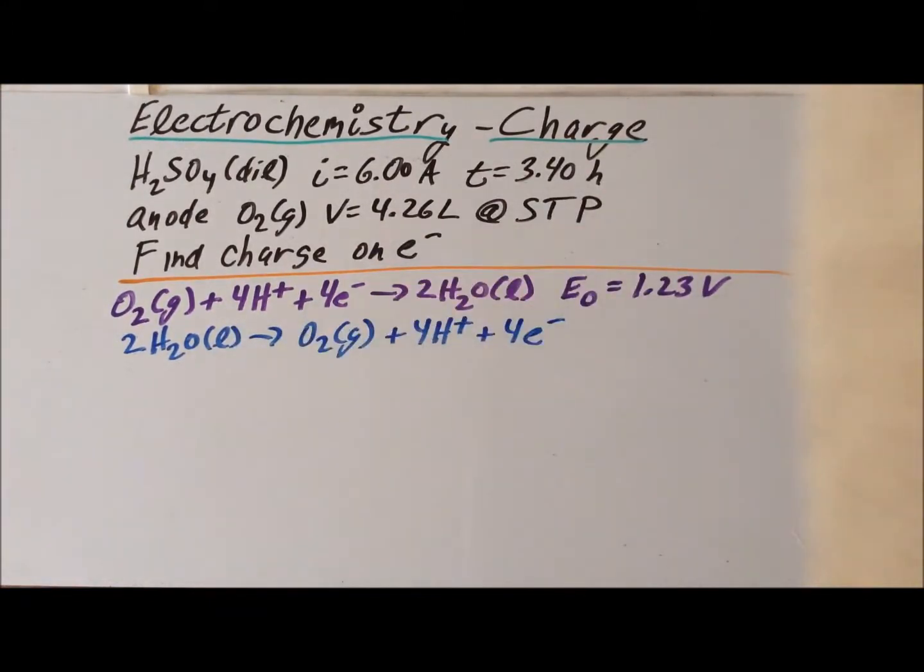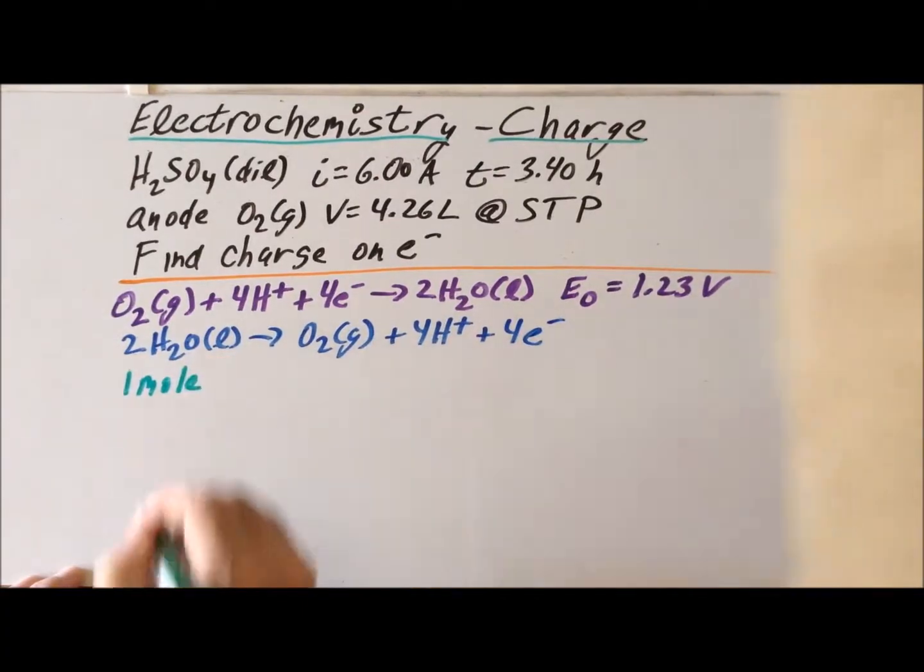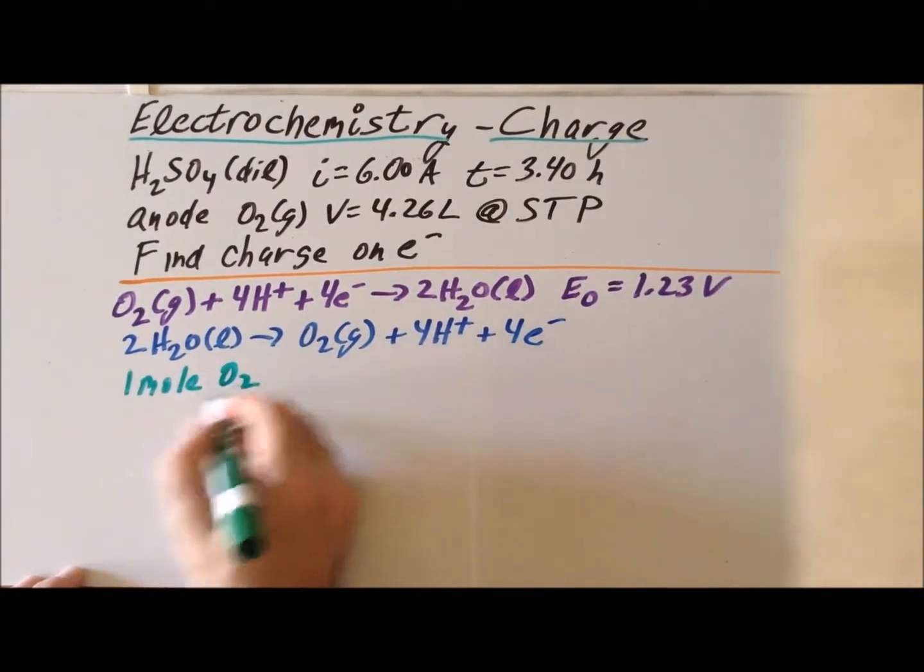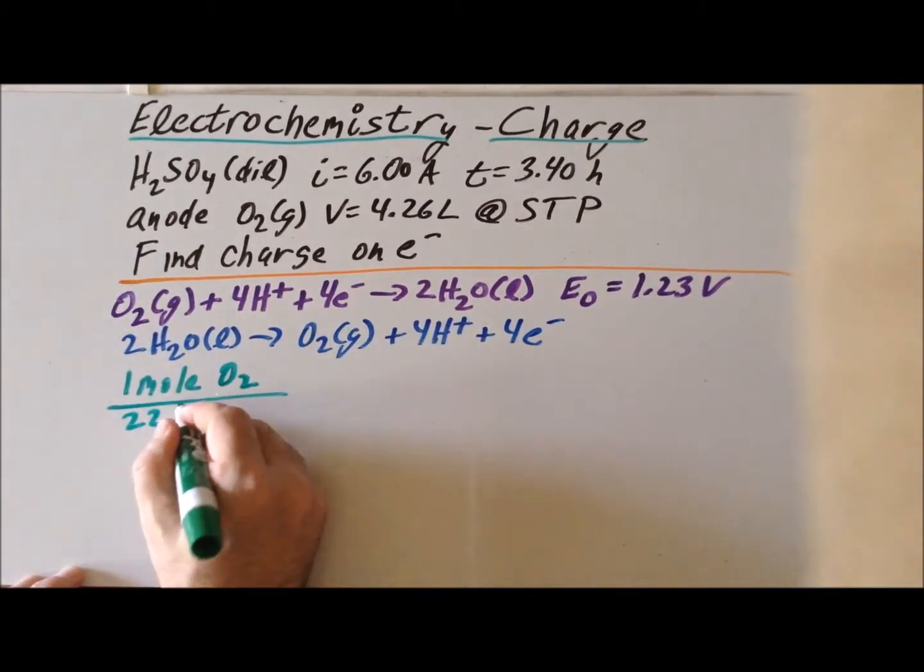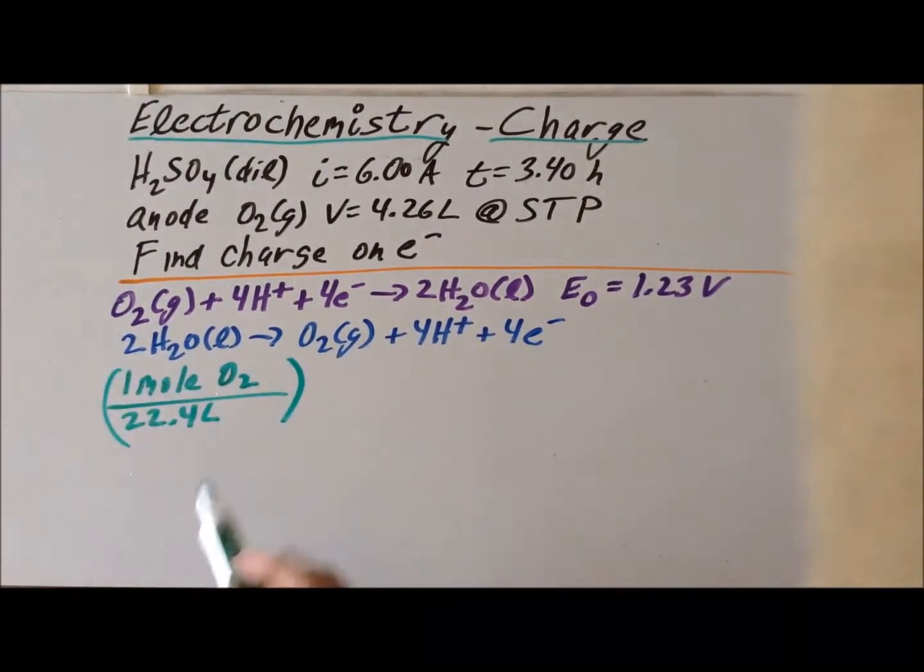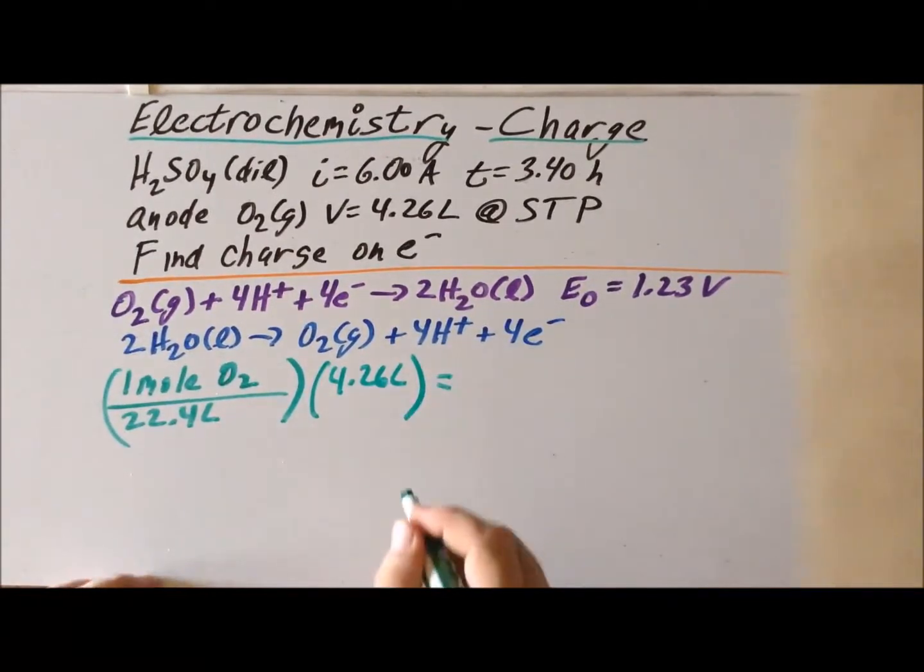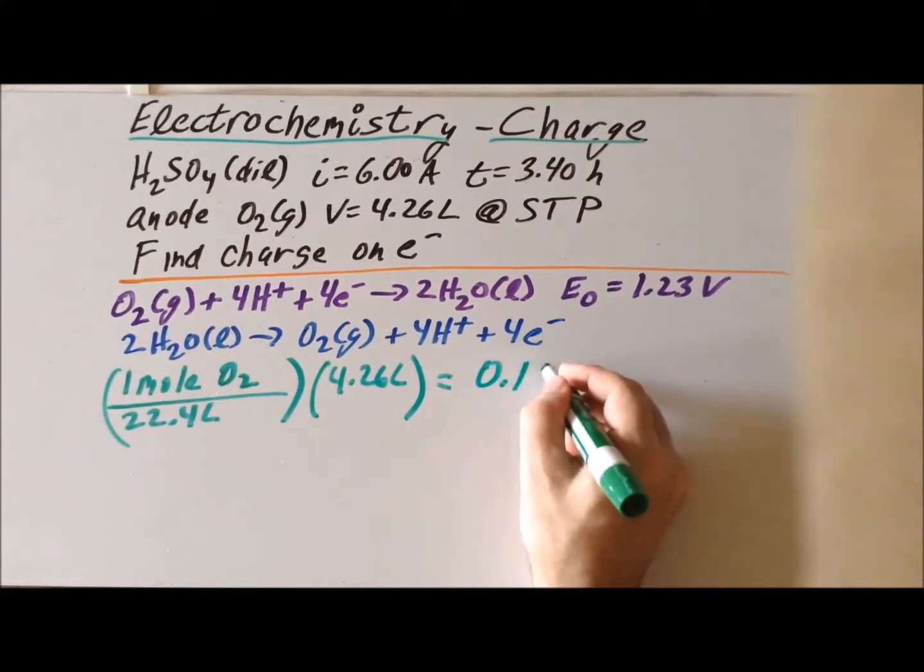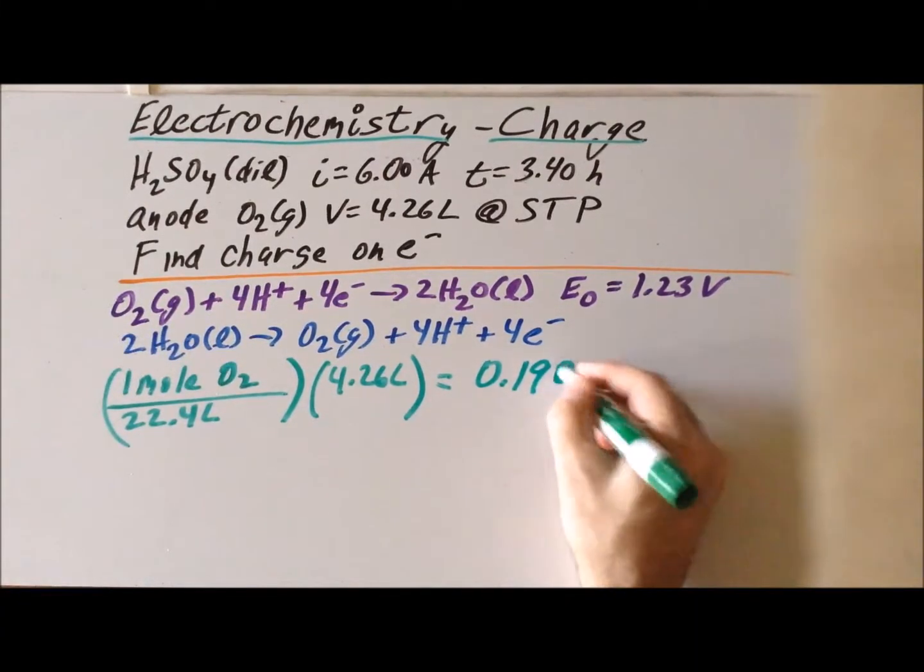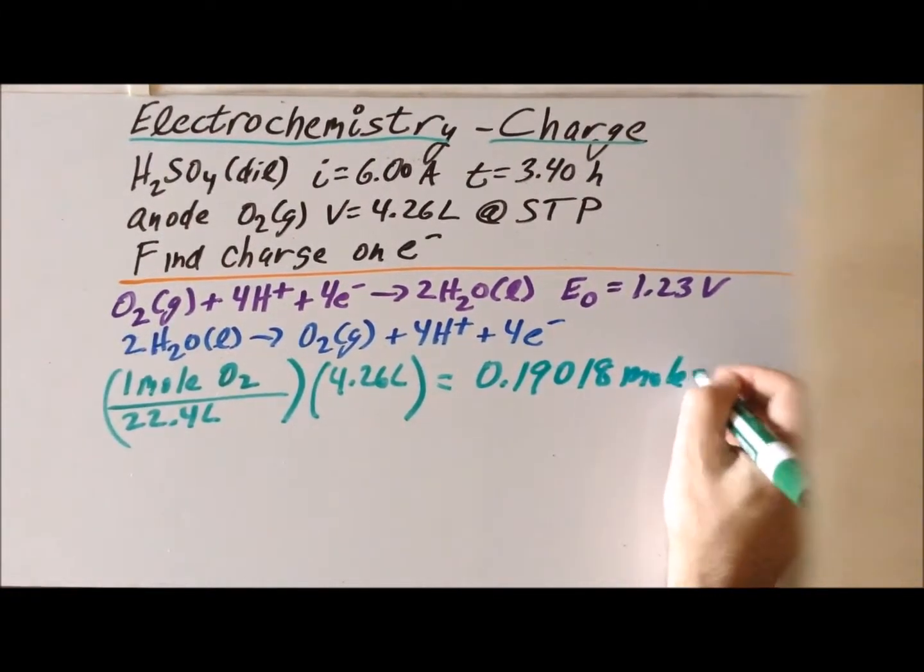Under conditions of standard temperature and pressure, we recall that any ideal gas has a volume of 22.4 liters. So we assume that oxygen is an ideal gas under these conditions. We can use this relationship and the fact that we evolve 4.26 liters to determine how many moles of O2 gas were generated. And we get a result of 0.19018 moles of O2 gas.